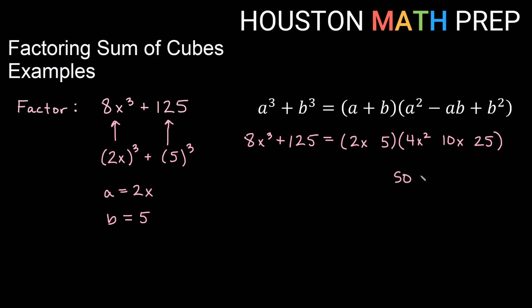Now remember to assign the signs in the factor, we go through and we remember the SOAP method. So same is S. What we started with is plus, so same is plus. Opposite of what we started with would be minus for the next one. And then always plus or always positive for the last one. So we get 2x + 5 as our short factor. 4x² - 10x + 25 is our long factor.